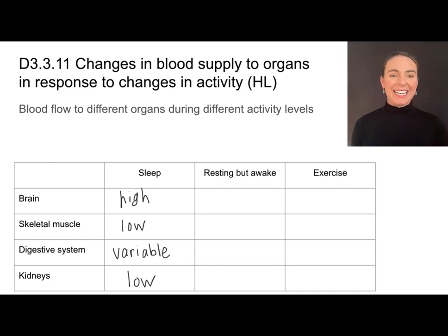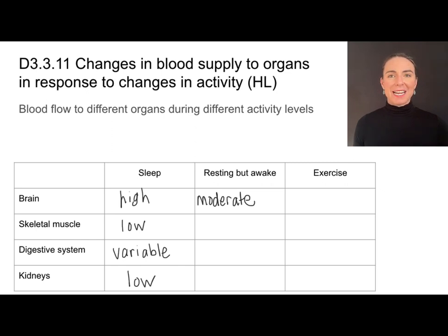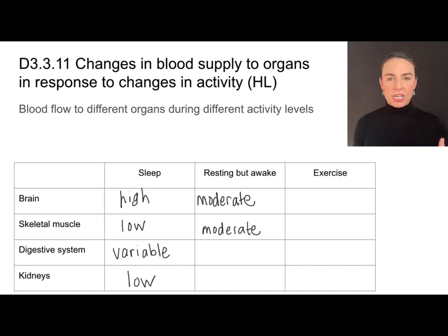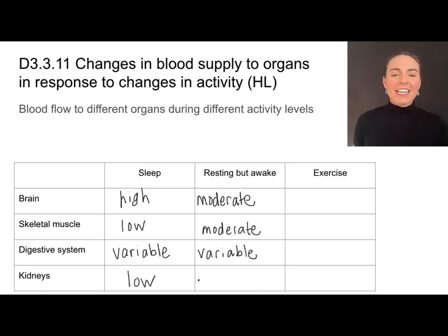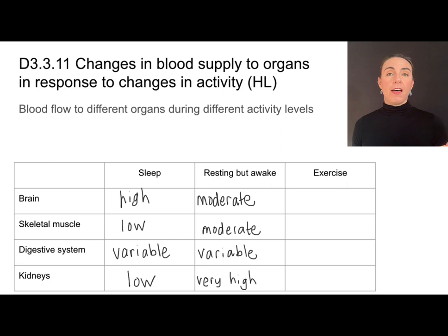When we are awake but resting, our brain receives a moderate amount of blood flow — just enough to maintain brain activities. Skeletal muscle also receives a moderate amount of blood; we don't need a lot since we're just resting, but we still need oxygenated, glucose-rich blood there. The digestive system is again variable based on whether you've recently eaten. Our kidneys are at their highest blood volume at this time — up to 20% of all of our blood when awake but resting goes to our kidneys. This is the time we're really focusing on filtration of that blood.